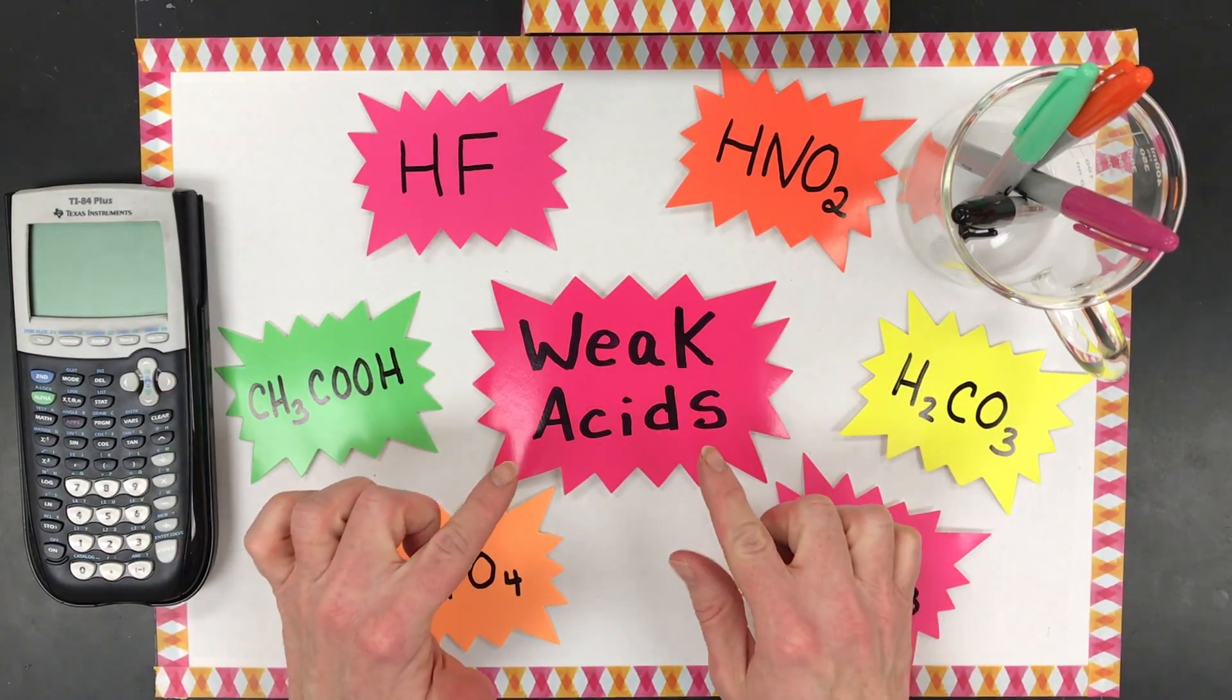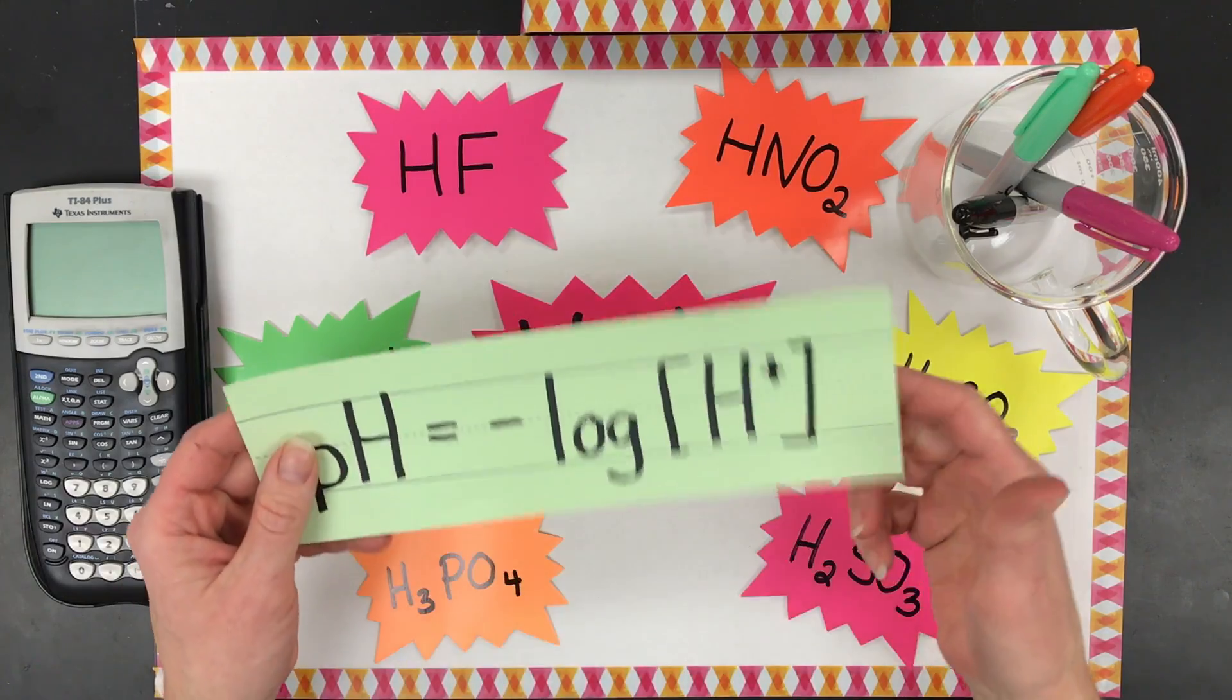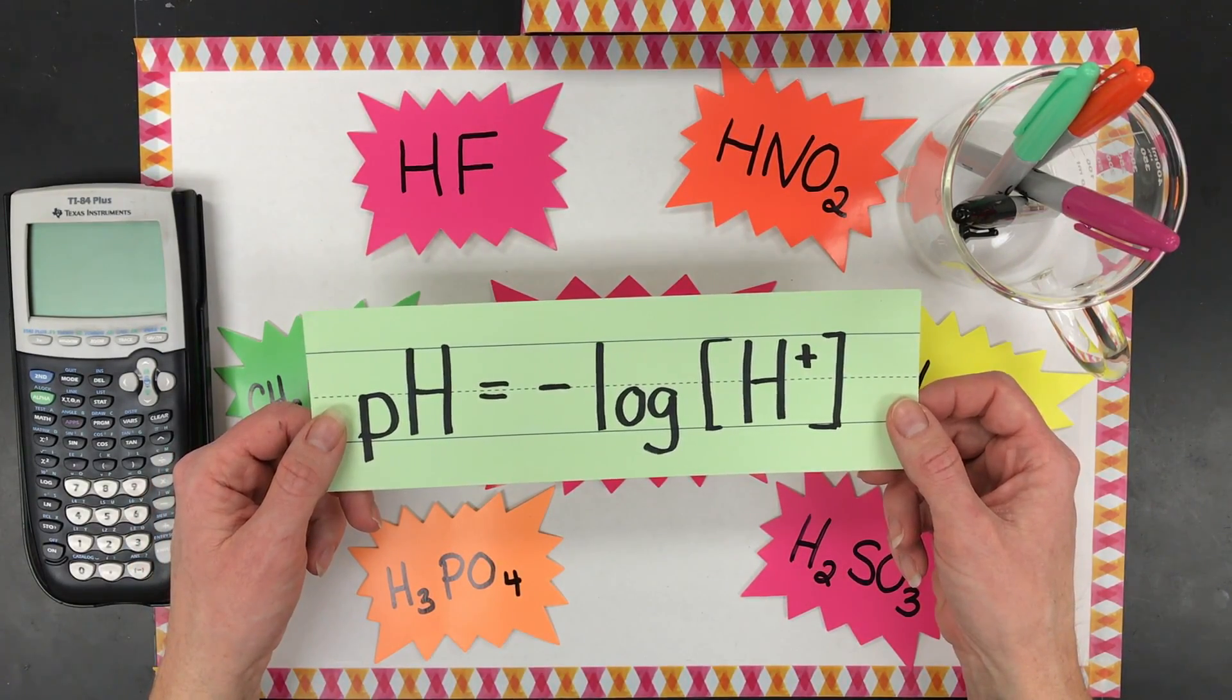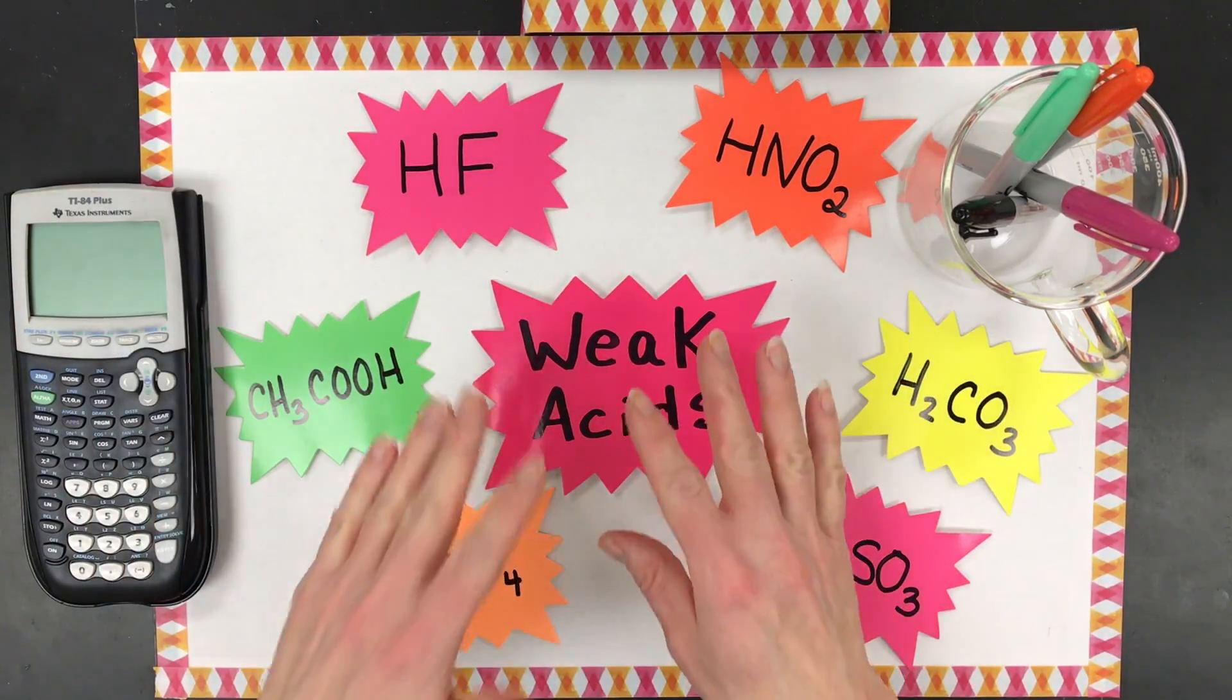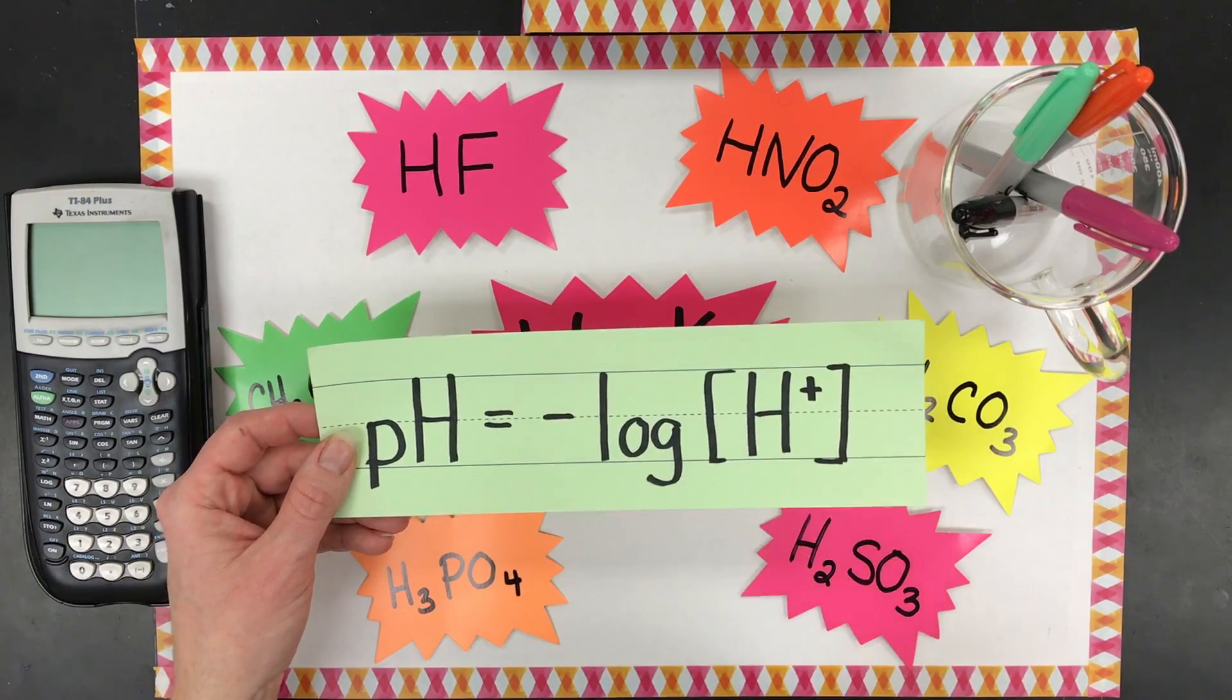Welcome back, chemists. In this video, I'm going to go through how to calculate the pH of weak acids. You may have seen this formula before, and we are going to use it, but the different thing is we can't just put our hydrogen ion concentration in here directly like we could with strong acids.